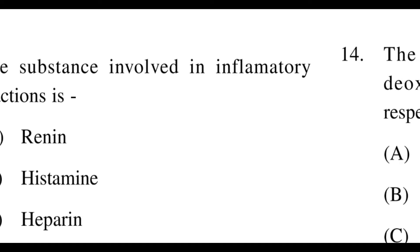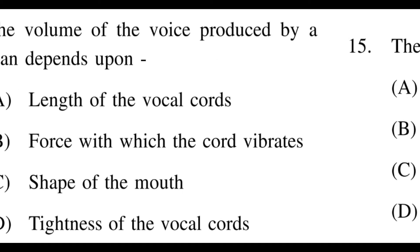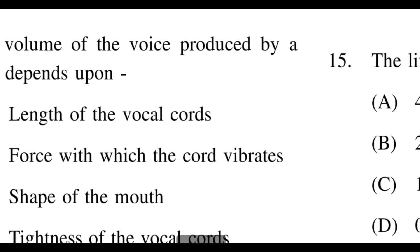Next question: The volume of the voice produced by a man depends upon? Options: A: length of the vocal cord, B: force with which the cord vibrates, C: shape of mouth, D: tightness of the vocal cord. The right option is B — force with which the cord vibrates. The volume of the voice depends on this force. That is why the voice changes when speaking angrily versus speaking politely.